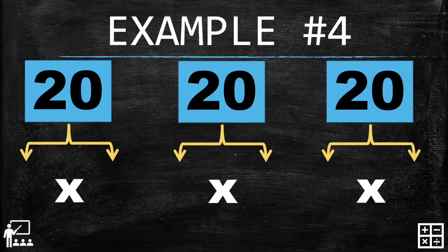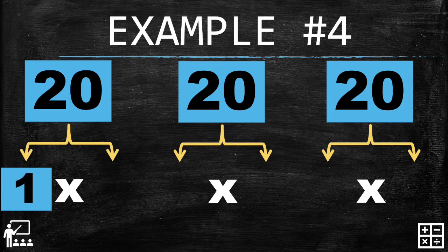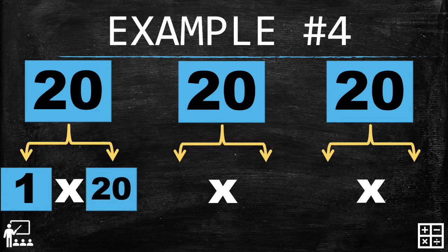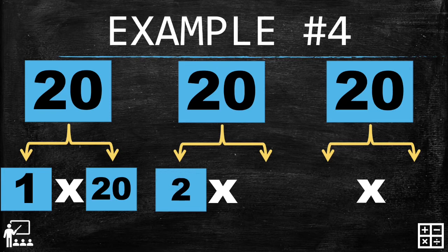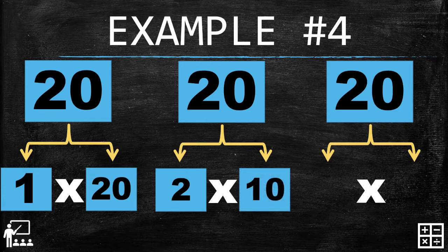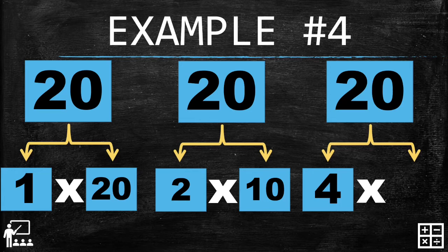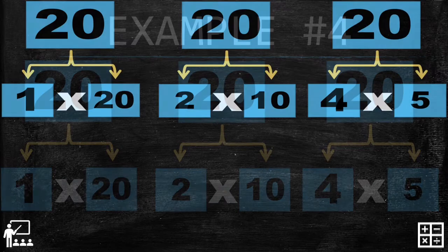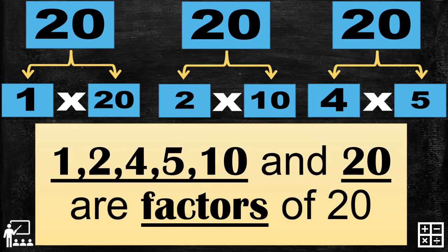Let's try example number four — the number twenty. What are we going to multiply by one to get twenty? Twenty. Can you guess what number multiplied by two gives twenty? Correct, ten. Two multiplied by ten gives you twenty. What number multiplied by four gives twenty? Five — very good. To summarize, one, two, four, five, ten, and twenty are factors of twenty.